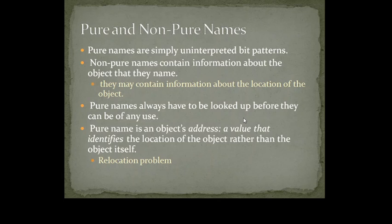Now these names can be pure or non-pure. We call a name pure when it is simply an uninterpreted bit pattern — just something that will help us in finding the address of the object. However, there is something called non-pure names. Non-pure names also contain information about the object, usually the location of the object. Non-pure names are actually referring to the object itself, whereas pure names refer to the address of the object.